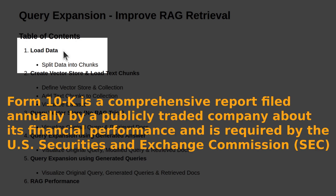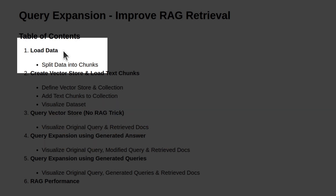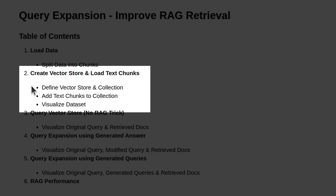Form 10-K is a financial performance report filed by a publicly traded company to the Securities and Exchange Commission. It's a simple 80-page PDF report that we'll use as the dataset for our tutorial. After loading the PDF report, we'll split the data into text chunks so we can load them to the vector store. In the second section, we'll load those text chunks into the vector store. For this tutorial, I've decided to use the ChromaDB vector store.